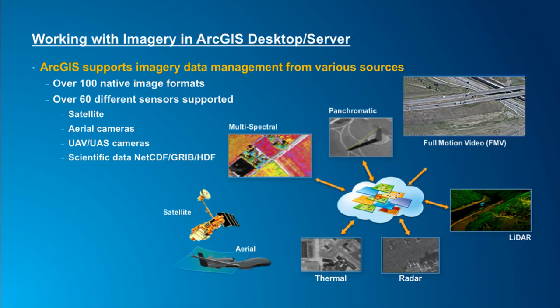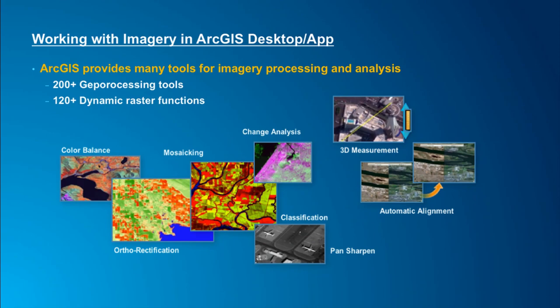In terms of functionality we provide for you to process and analyze image data, we have over 200 different geoprocessing tools for working with image data. We also have over 120 dynamic raster functions which you can use to apply on-the-fly processing and analysis functions on raster datasets.